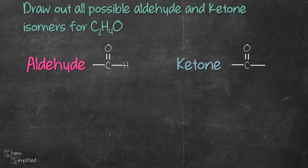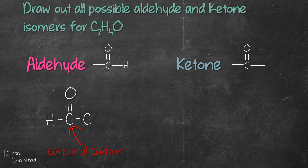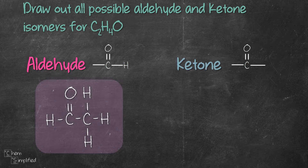Let's start with aldehyde. Since we only have two carbons, let's place them next to each other, then add in the carbonyl group and hydrogen right next to the carbonyl carbon. We'll fill in the remaining bonds on carbon with hydrogens — since carbon makes four bonds, the carbon on the right will connect to three hydrogens. So we've completed our first isomer, and there's no other way to draw an aldehyde with two carbons.